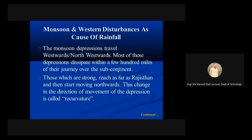The monsoon depression travels westwards, northwards, or north-westwards. Most of these depressions dissipate within a few hundred miles of their journey over the subcontinent.